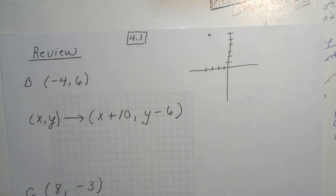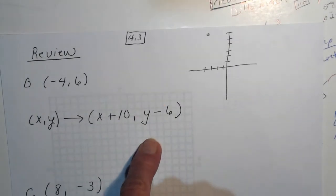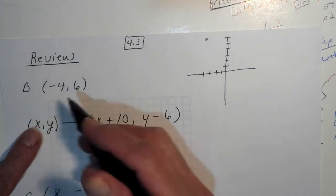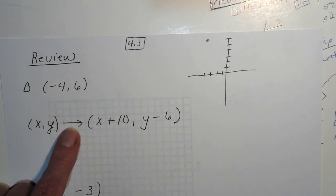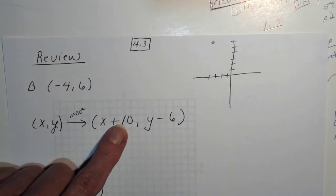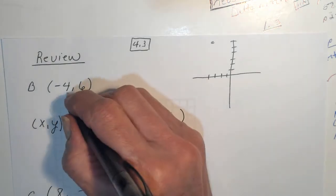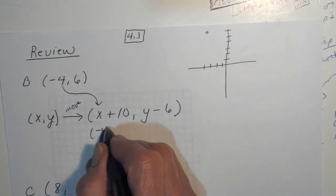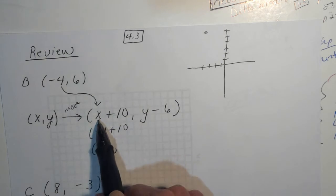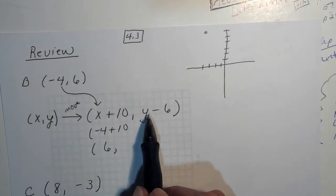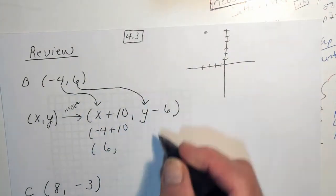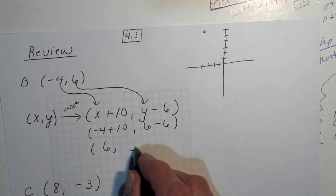We're going to translate this point using this rule. Do we remember what this rule says? This rule says take your point — the arrow means move your point following this rule. And this says add 10 to your x value. If you put negative 4 there and add 10 to it, you get 6. Then take your y value and subtract 6. Six minus 6 is 0.